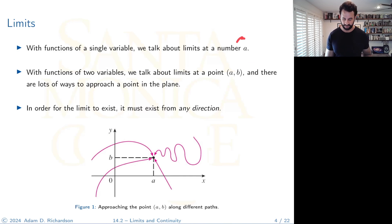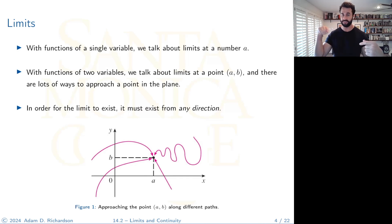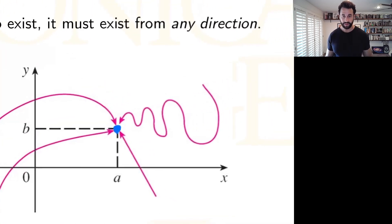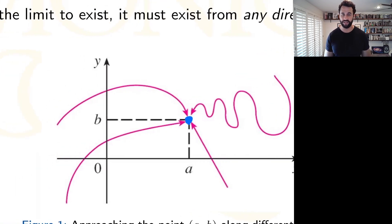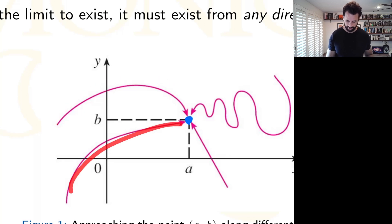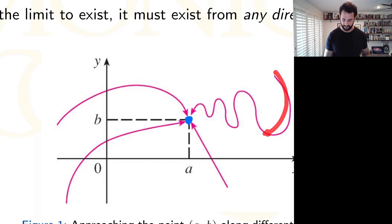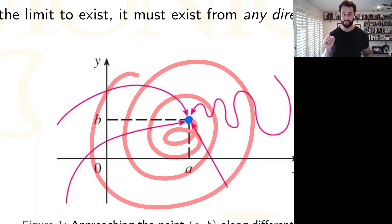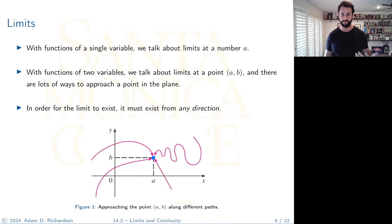With functions of a single variable we talk about limits at a number; with functions of two variables we talk about limits at a point. Here's the catch: there are infinitely many ways to approach a point in the plane. We're not restricted to just one axis anymore — we have a whole plane to work in. You could come at the point from any direction: a straight line, wiggling around, even a spiral.